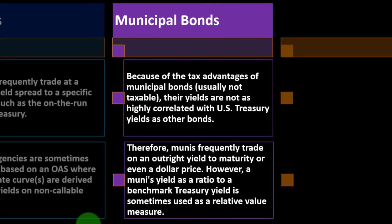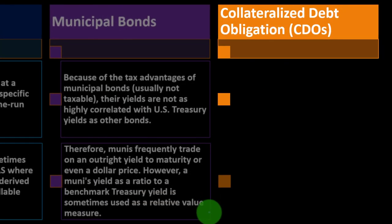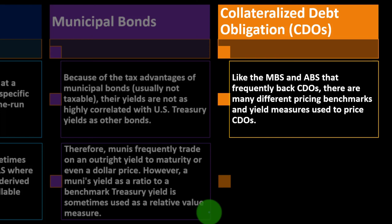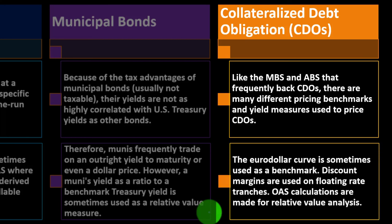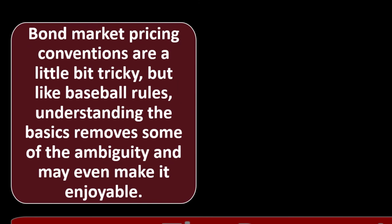Municipal bonds, because of their tax advantages — usually not taxable — have yields that are not as highly correlated with U.S. Treasury yields as other bonds. Therefore, munis frequently trade on an outright yield to maturity or even a dollar price. However, a muni's yield as a ratio to the benchmark treasury yield is sometimes used as a relative value measure. Collateralized debt obligations (CDOs), like the MBS and ABS that frequently back them, use many different pricing benchmarks and yield measures. The Eurodollar curve is sometimes used as a benchmark; discount margins are used on floating-rate tranches; and OAS calculations are made for relative value analysis.